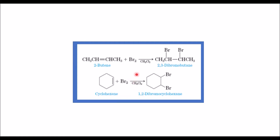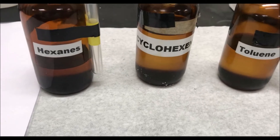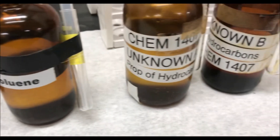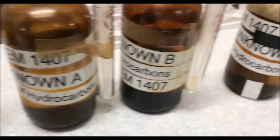To find the reactivity of hydrocarbons, we will perform the bromine test. The reaction of bromine with an alkene is an example of an addition reaction. When bromine reacts with an alkene, the yellowish-orange color of the bromine disappears. The reaction of bromine with an alkane is very slow and requires light, and aromatic compounds are not reactive with bromine. For this test, we use hexane, cyclohexene, toluene, and three unknowns: unknown A, B, and C.